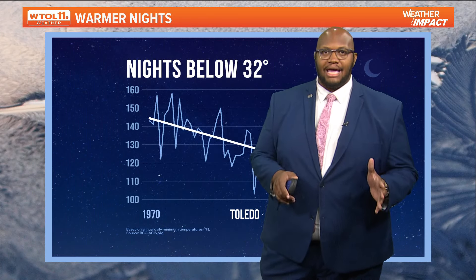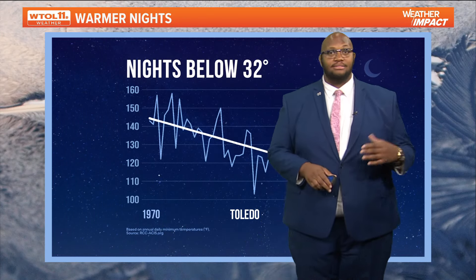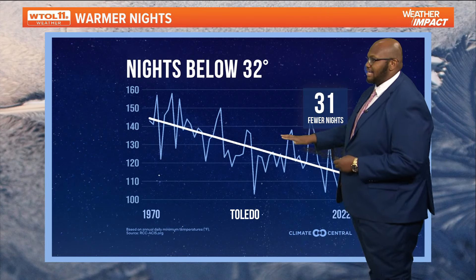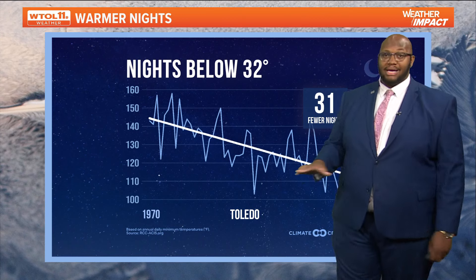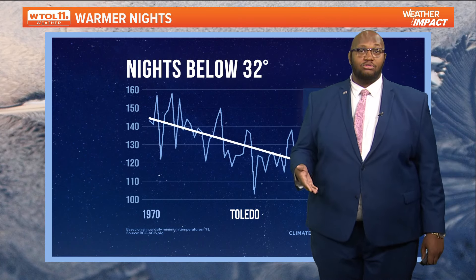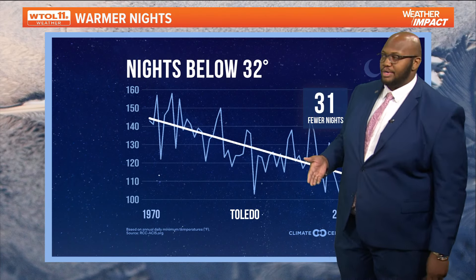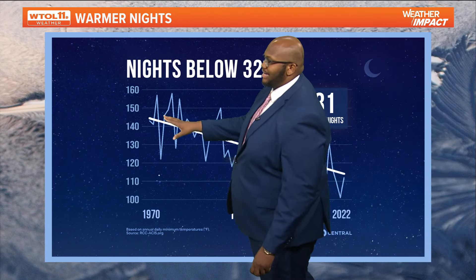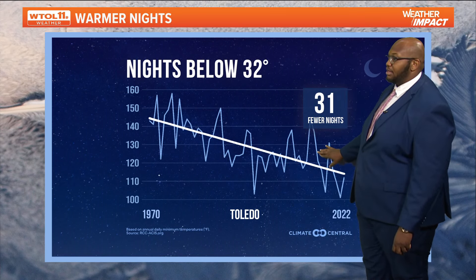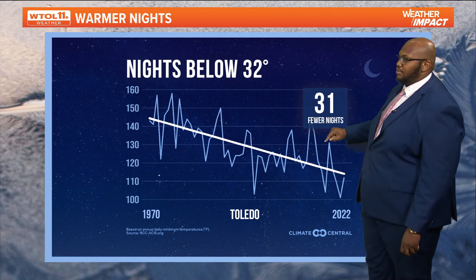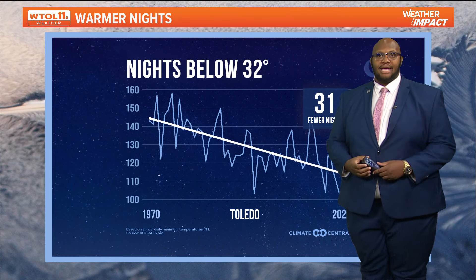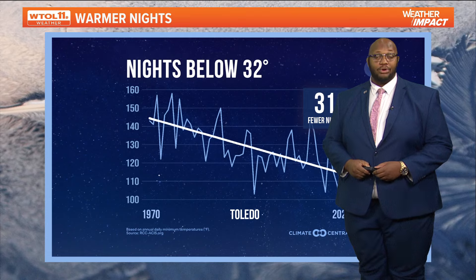Taking a climate angle: we're seeing fewer nights below 32 degrees. Due to climate change and a warming climate, we're starting to see fewer days and nights where temperatures drop below 32 degrees. Since 1970, we've seen a drastic decrease in nights below 32 degrees — about 31 fewer days where we've seen temperatures below freezing.